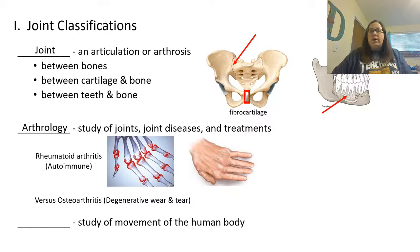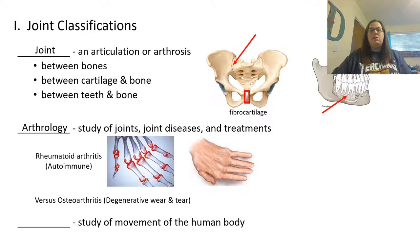Arthrology is the study of the joints, joint diseases, and treatments. If somebody is going to go to the doctor for arthritis, that's an autoimmune issue, whereas osteoarthritis is more degenerative wear and tear. So there are different types of diseases that deal with the joints.